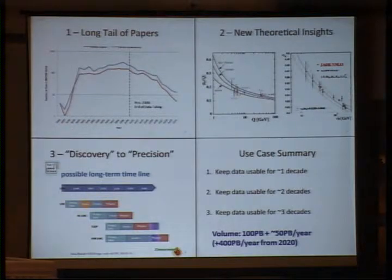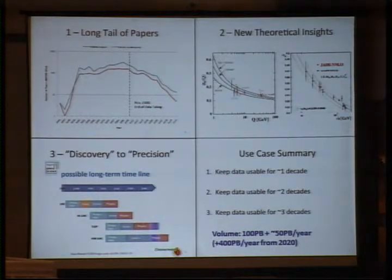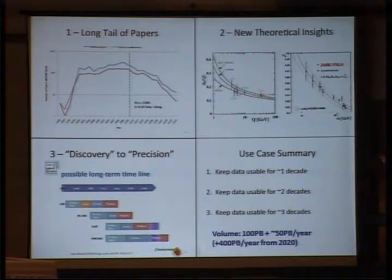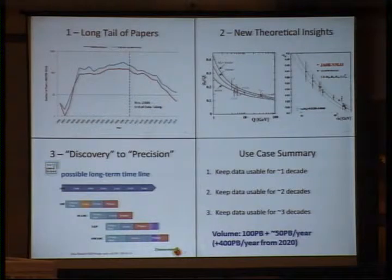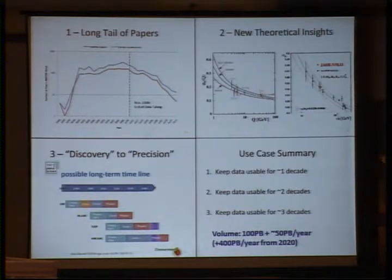I want to give a high-level overview of the scientific motivation for keeping this data. There are other reasons — educational outreach — but I want to concentrate on three main arguments. The first is the long tail of papers: when data taking stops, scientific output does not stop. You can see there's a tail of publications for the previous collider we had at CERN, LEP, which was in the same tunnel, that lasts at least 10 years. In fact, even now, 15 years after data taking stopped, some important papers are still being written on that data.